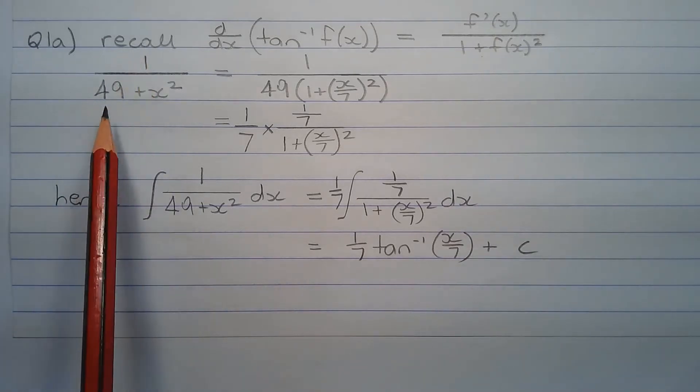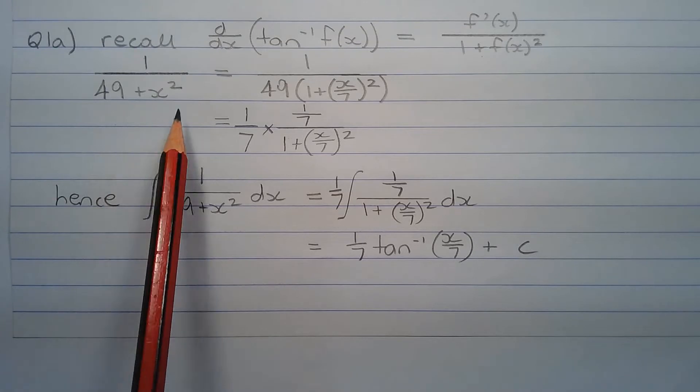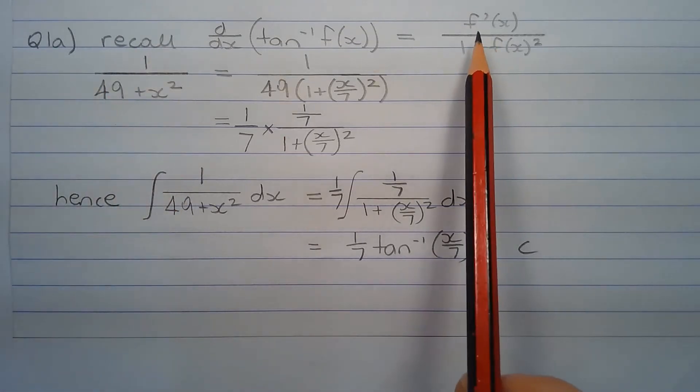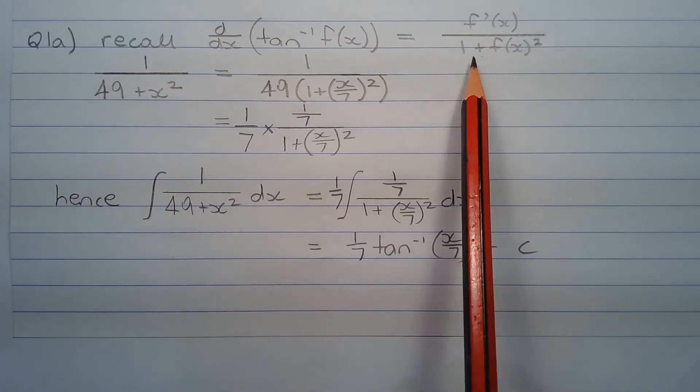So to integrate 1 over 49 plus x squared, we're going to convert this integrand into the standard form f'(x) over 1 plus f(x) squared.